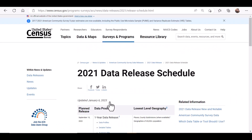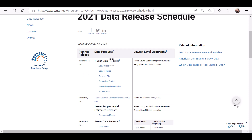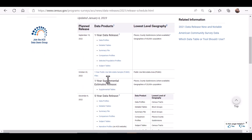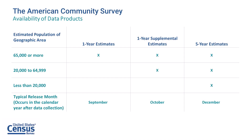The main ACS data products are released about one year after the data are collected. They include the one-year estimates, one-year supplemental estimates, and five-year estimates. ACS one-year estimates, which combine data collected over 12 months, are available for geographic areas with a population of 65,000 or more. ACS one-year supplemental estimates, which are simplified versions of popular ACS tables, are available for geographic areas with populations of 20,000 or more. The five-year estimates, which combine data collected over 60 months, are available for geographic areas of all sizes down to the granular census tract and block group levels. You can access the latest release schedule and information for prior years' releases on our website's data release page linked below.